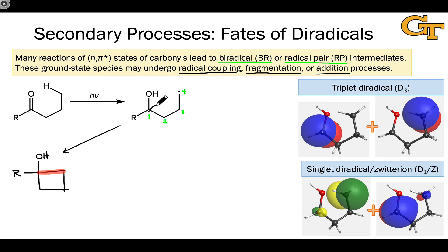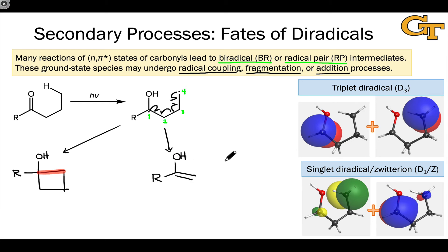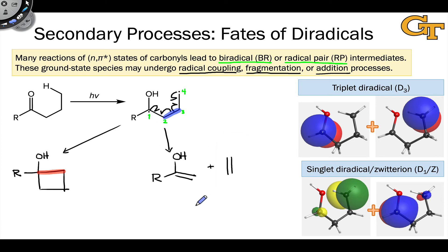The other thing that can happen is fragmentation — an elimination process driven by the formation of two new pi bonds. The electron flow is reminiscent of a beta elimination, where two new alkenes form. In this case, this would lead to an enol on the left half and an alkene — ethylene — on the right half. What's really happened is homolytic cleavage of the 2–3 bond, leading to two new pi bonds on either side.